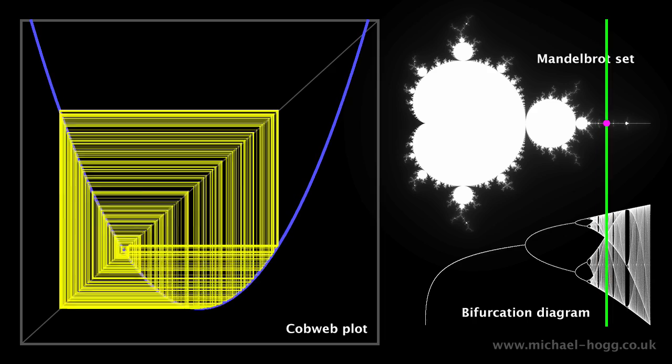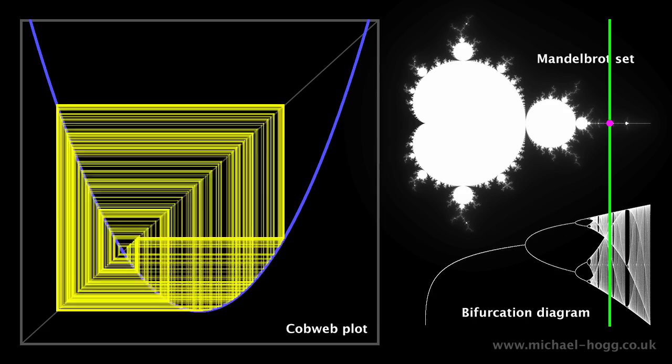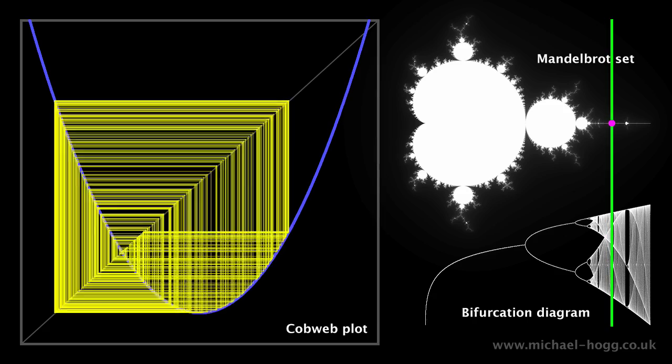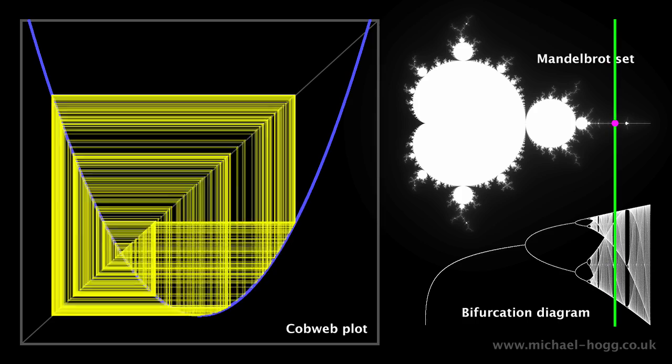Here, we're approaching a baby Mandelbrot set, and the cobweb plot will become orderly for a moment, and then return to chaos.